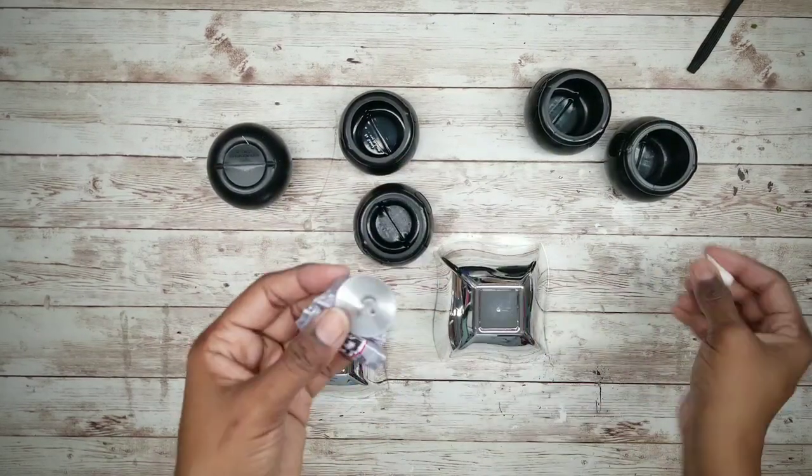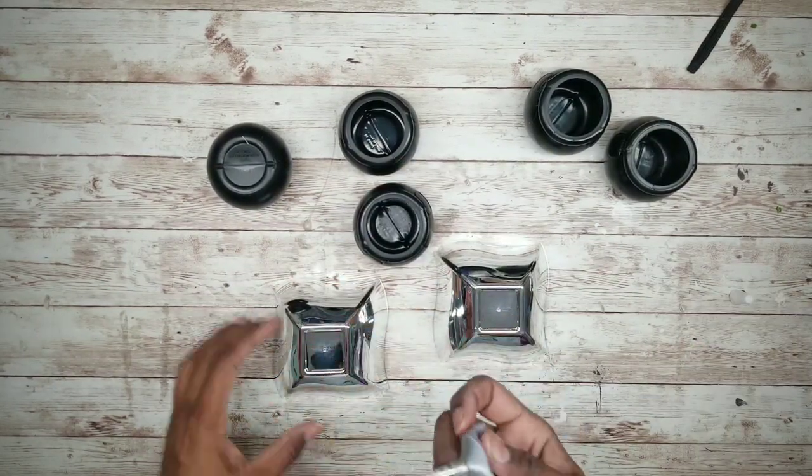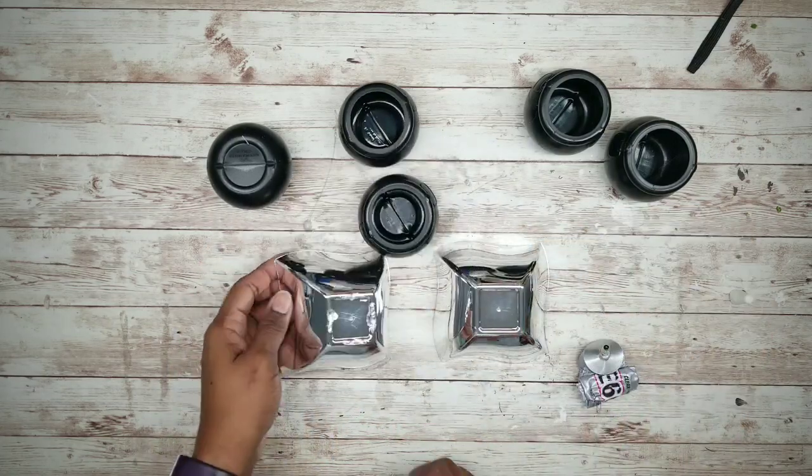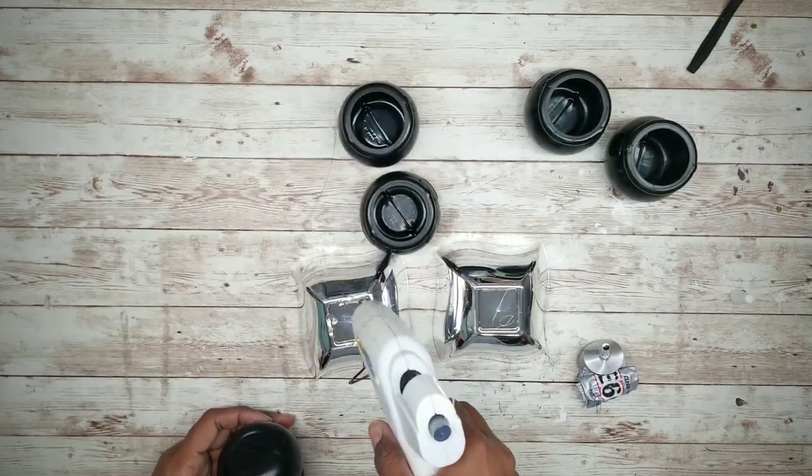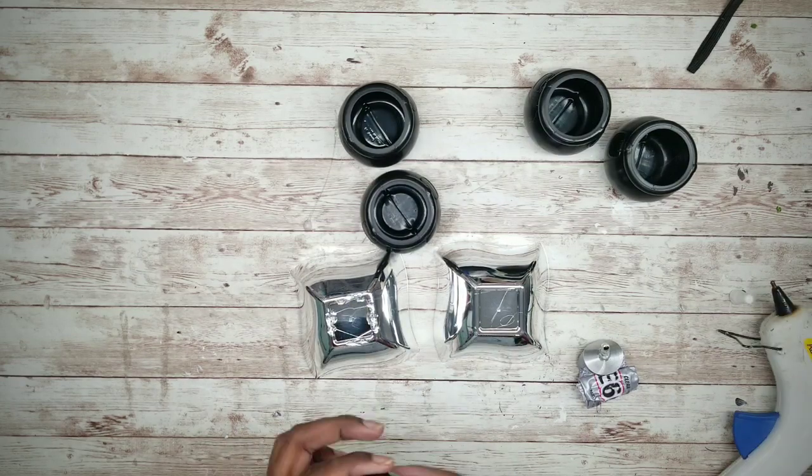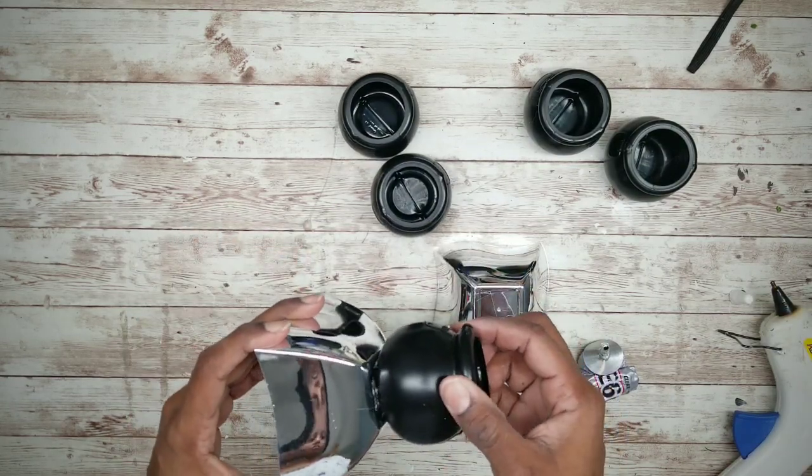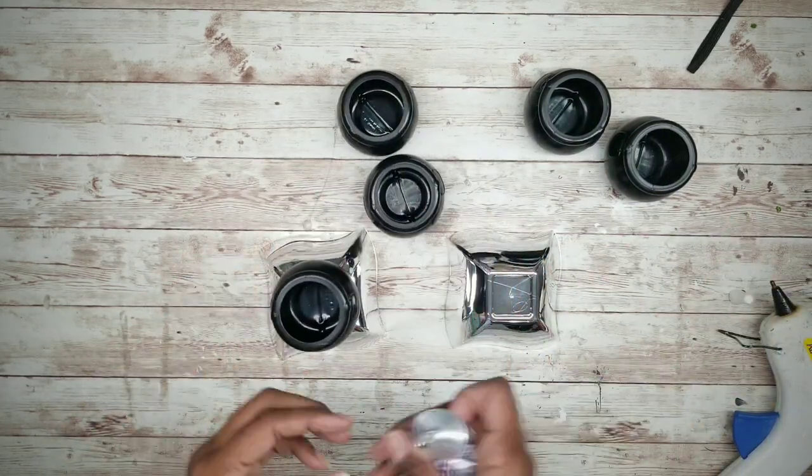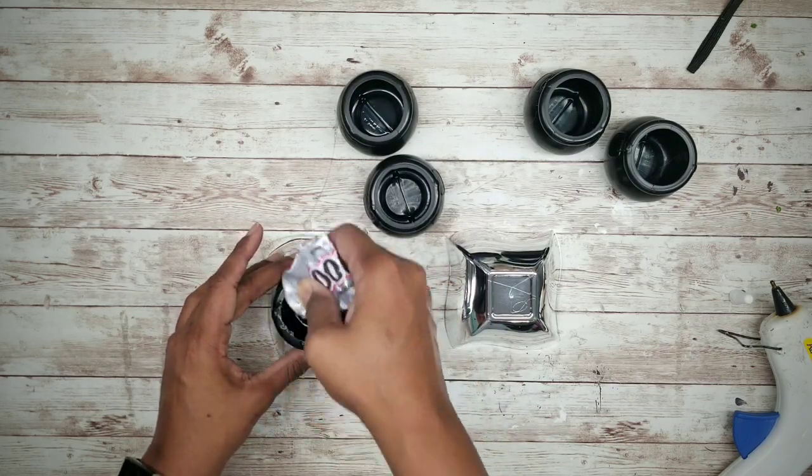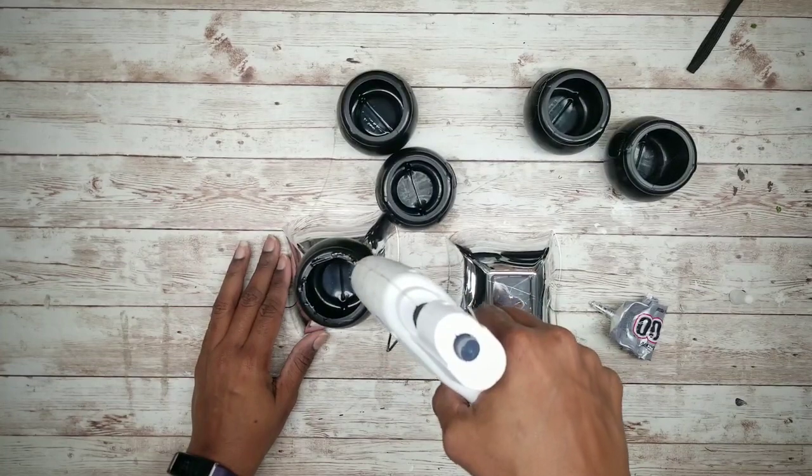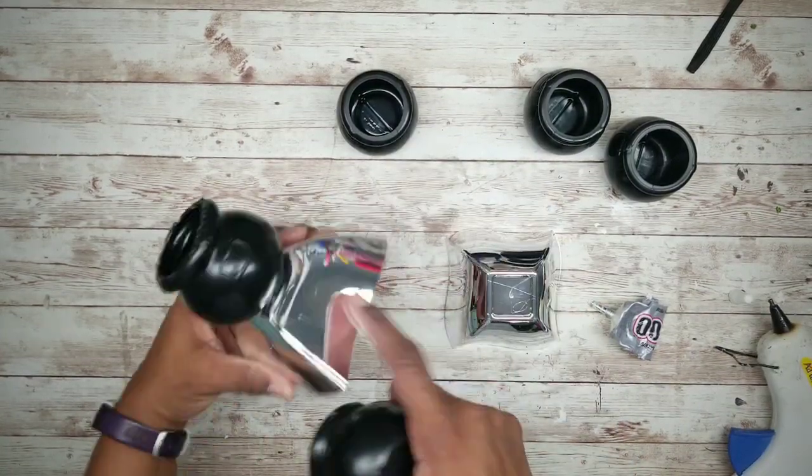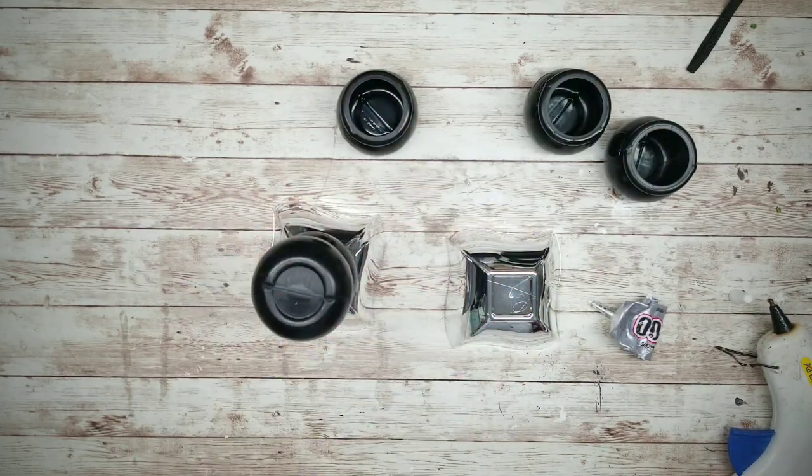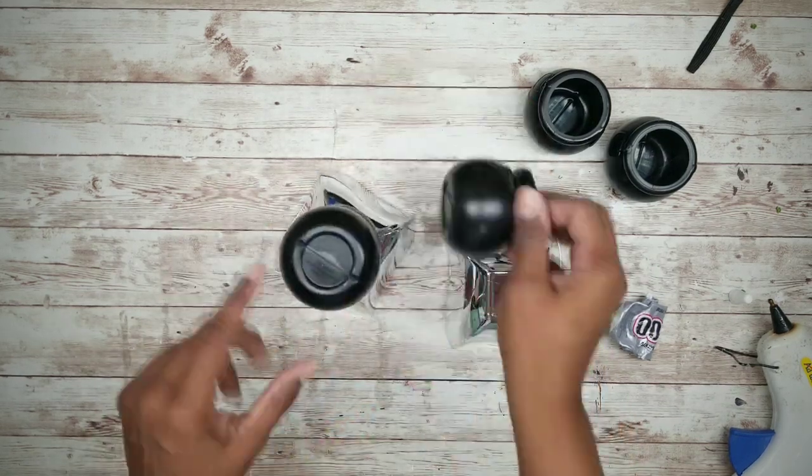So now I'm going to take some E6000 adhesive and apply it to the bottom of the bowl. And then I'm going to follow up with some hot glue for that instant hold. Now we're going to apply that first pot with the bottom side down. Once that is applied, we're going to add E6000 and hot glue to the top of that pot. And then we're going to place another pot on top with the open sides together, making sure we align the seams and the handles on the pots. And then we want to apply that third pot on top with the bottoms together.